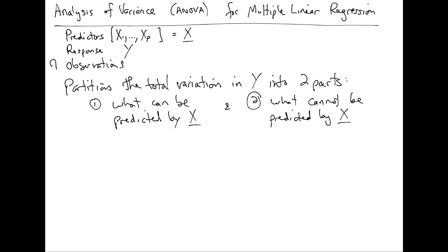And we use these three ideas — the total variation of y, the part of it that can be predicted by the predictors, and the part that cannot be predicted by the predictors — to say something about this regression. We work basically on a percentage basis, and we're going to develop something called R-square.